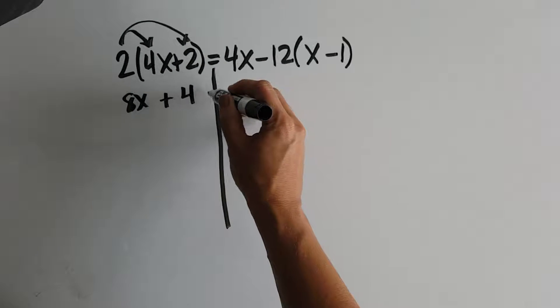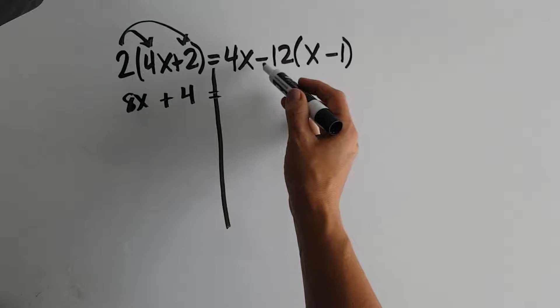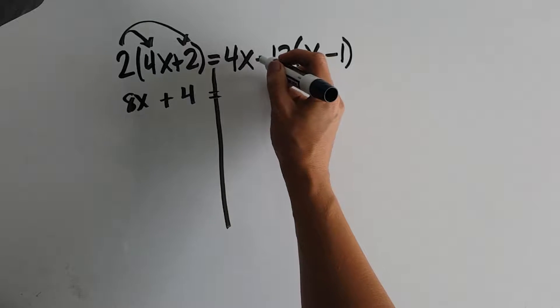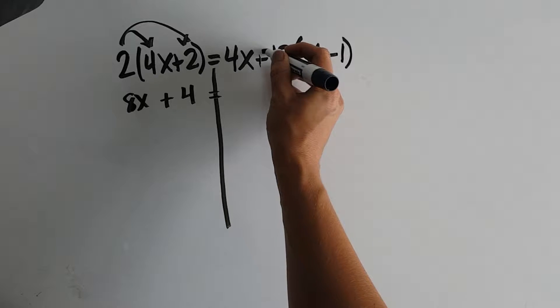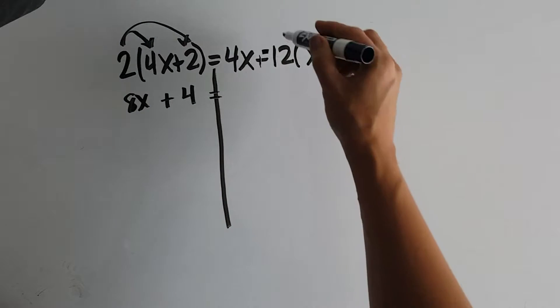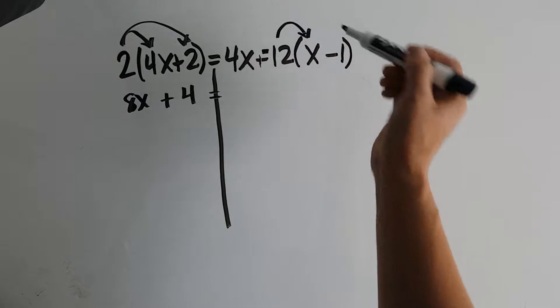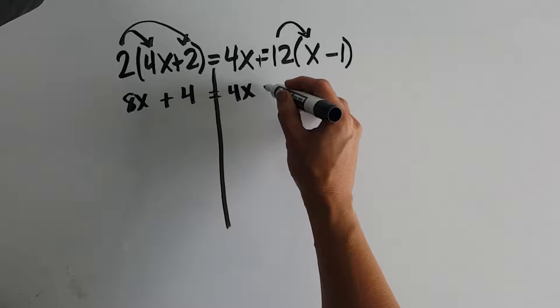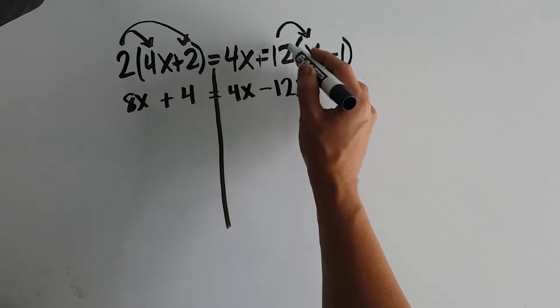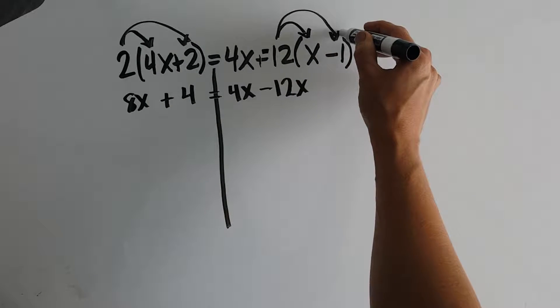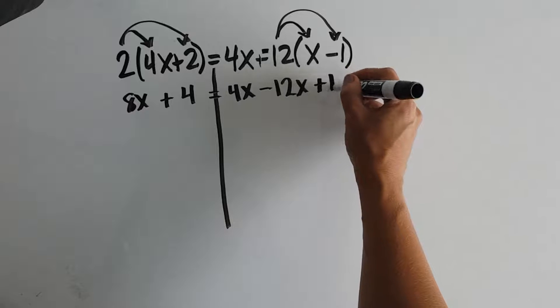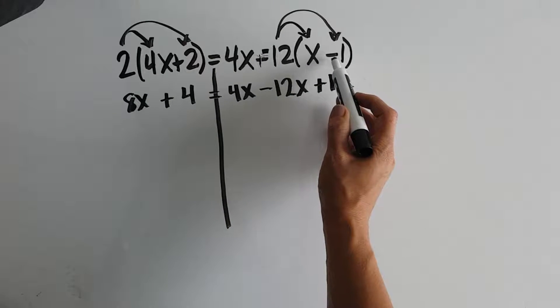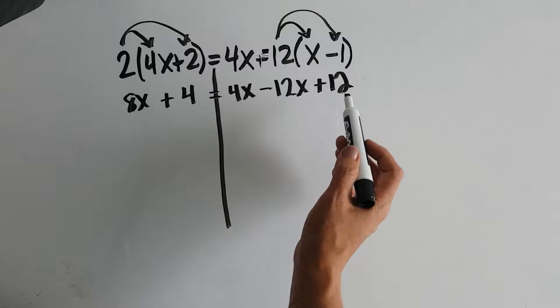On the right side, this says 4x minus 12 times the quantity x minus 1. This is really like having plus a negative 12. So again, we can distribute this negative 12 into our parentheses. So 4x is still here. We get minus 12x. And then negative 12 times a negative 1 is a positive 12. Remember to look at your signs because this is a really common error is to forget to distribute the negative to a negative.